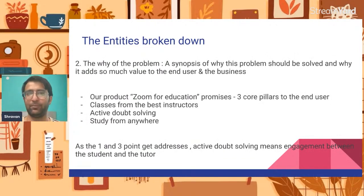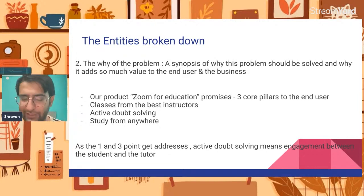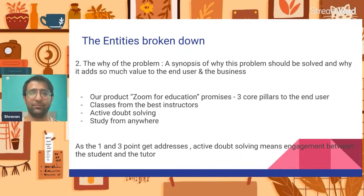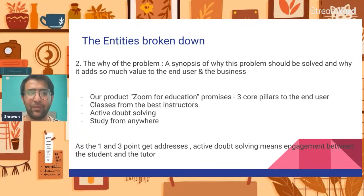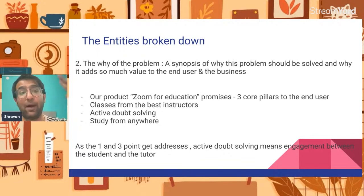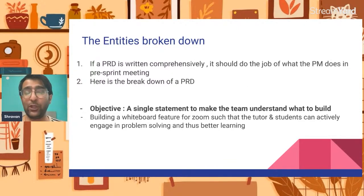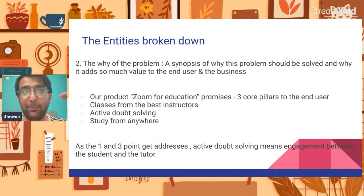The objective is a single statement for the team to understand what to build. Then comes the second part: the 'why' of the problem — why should we build this feature? This should be very clear, because most product teams and engineering teams work in silos. Engineers feel they don't understand context and just have to implement, so the second part of your PRD should explain why we should do it.